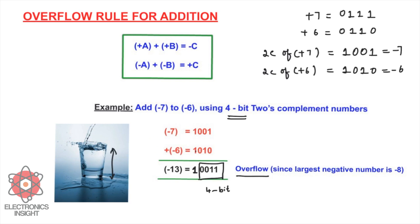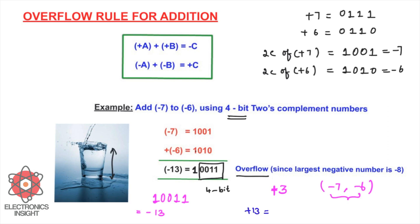Here, the register can hold only 0011. What does 0011 represent? It represents +3, but our operands were −7 and −6. The result has a different sign from the operands, so it is an overflow. Furthermore, the full 5-bit result 10011 is actually −13, confirming this. To verify: +13 in 5-bit is 01101, and the two's complement of +13 is 10011, which is −13 — exactly what we obtained.